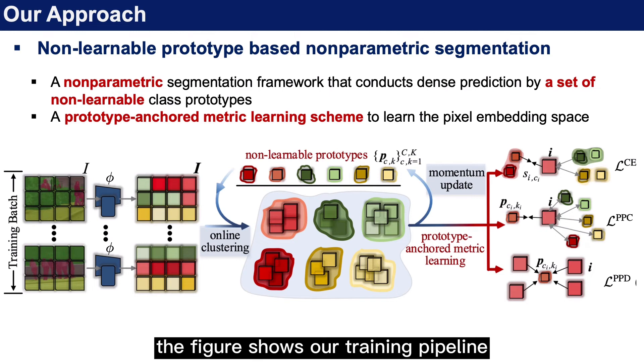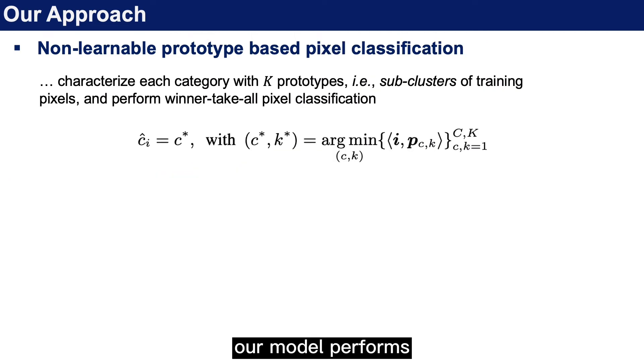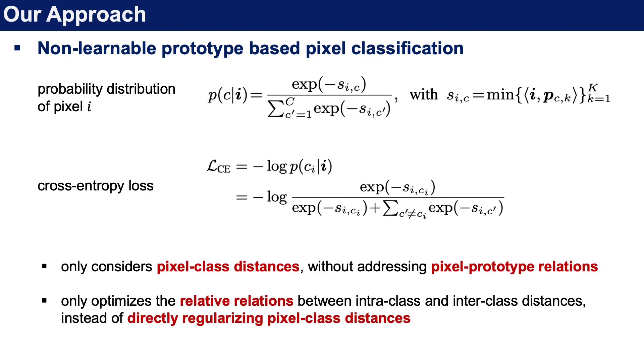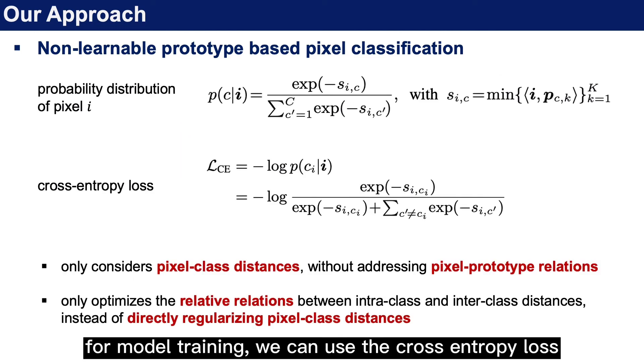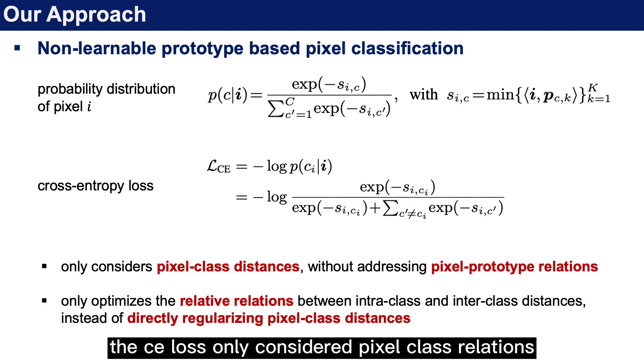The figure shows our training pipeline. Our model performs non-learnable prototype-based pixel classification. For model training, we can use the cross-entropy loss. However, the CE loss only considers pixel-class relations and only penalizes relative distances.